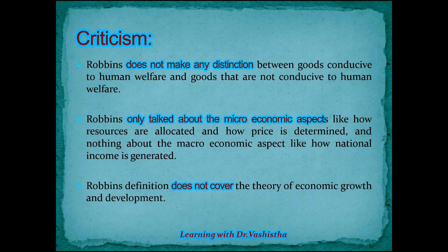According to Robbins, people can make choices and thereby choose the best alternative among available resources to attain their welfare. However, his theory was criticized. Contemporary economists pointed out that Robbins did not make any distinction between goods that are conducive and those not conducive to human welfare. He only said that people can make choices among resources with alternative uses, without distinguishing what kind of goods — conducive or non-conducive — these are.